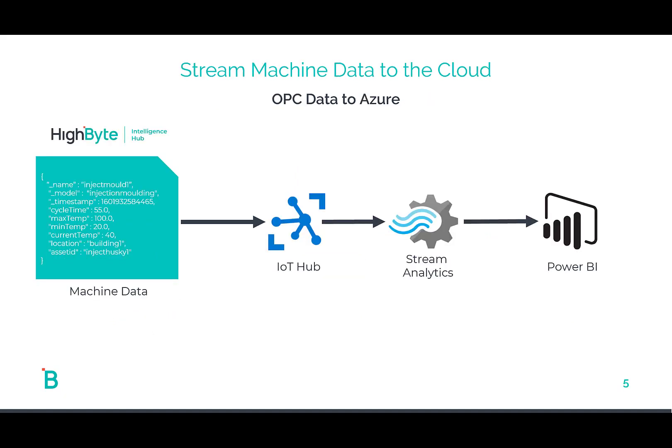Let me show you a better way. What if we sent the contextualized data model to the cloud and built that on the factory floor — where we have all that information at our fingertips? So now we're going to send an injection molding model with all the relevant data: cycle time, max temp. That's going to go into IoT Hub, which sends it to stream analytics that can easily work with a data type like this. With four lines of code or less, that goes into Power BI and we're done.